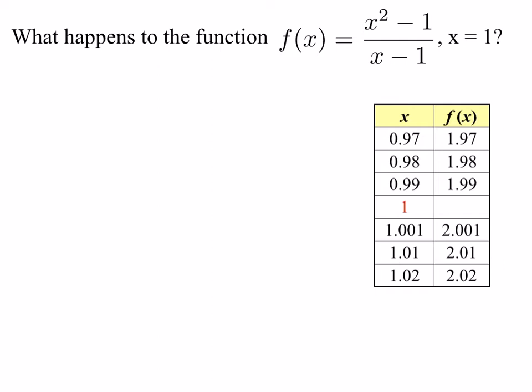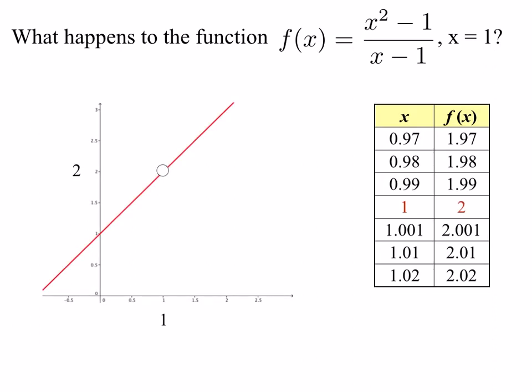Clearly, as we get closer to 1 from both the left and the right, the functional values are getting closer and closer to 2. I've graphed the function on the left side of the slide. Notice the function looks just like a straight line, but it has a hole in it at 1. The reason why it has a hole at 1 is because for f of x equals x squared minus 1 over x minus 1, the value 1 is not in the domain of the function — when x equals 1, we have a 0 in the denominator. But from our chart, as we approach 1 from both sides, the functional values are getting closer and closer to 2, and therefore our limit as x approaches 1 for this function should be 2.